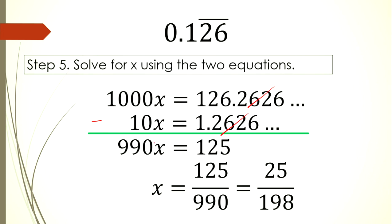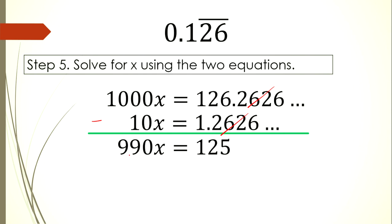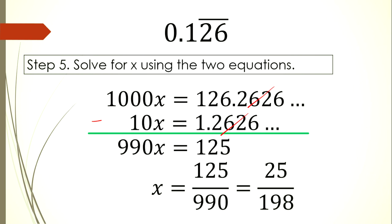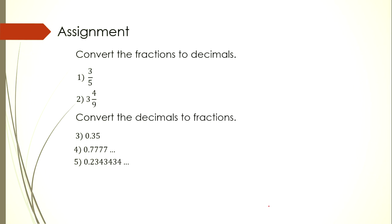To find x, divide both sides by 990. So x = 125/990. In lowest terms, that is 25/198. For your assignment, complete the five given items. Thank you for listening.